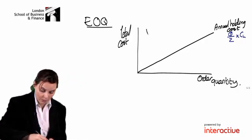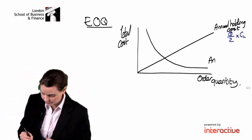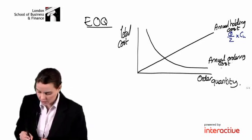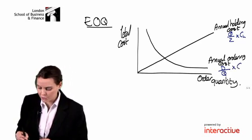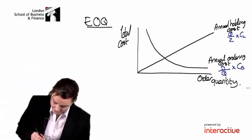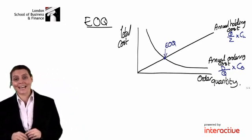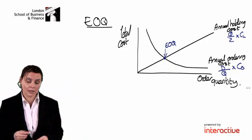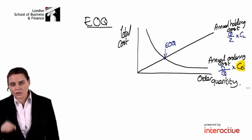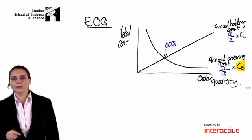Our annual ordering costs go down as order quantity goes up — calculated as demand over order quantity, multiplied by the cost of placing a single order. Our economic order quantity occurs at the point where annual holding costs are exactly equal to annual ordering costs. We are assessing what happens if the cost of placing a single order decreases.